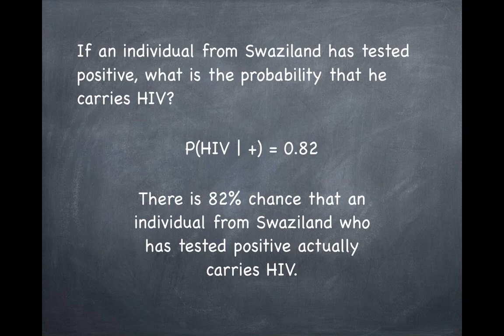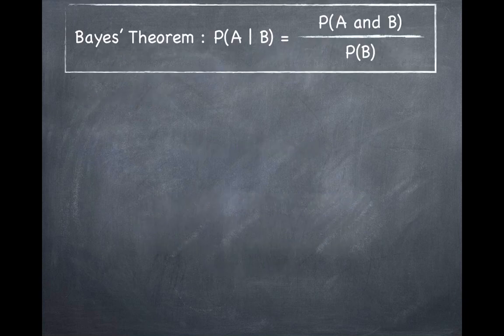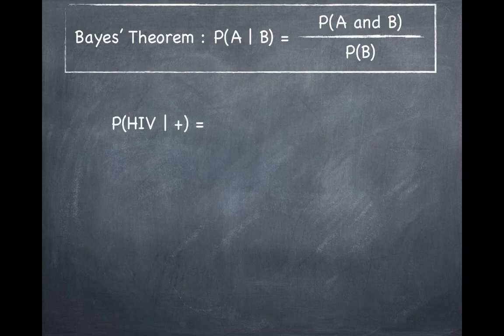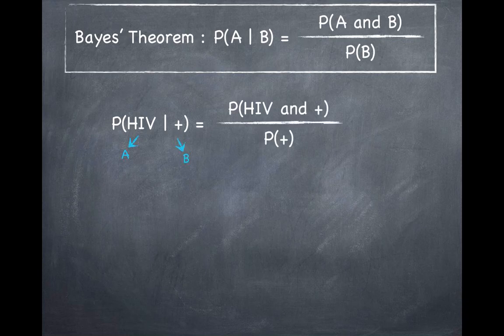We have gone through this problem calculating conditional probabilities without explicitly mentioning Bayes' theorem, even though we have used it. So now let's put these things in context in terms of Bayes' theorem. Generically speaking, the theorem says: if you want to find the probability of A given B, all you need to do is find the joint probability of A and B and divide it by the probability of B.